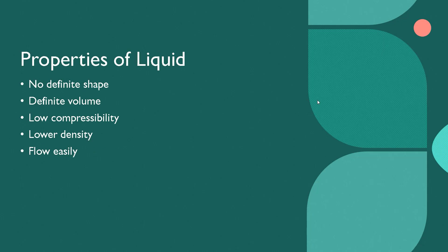Properties of liquid: No definite shape — liquid particles are close together but not orderly arranged. These particles are in constant motion and slide past one another but stay together. Definite volume — liquid particles have strong attraction between each other, which allows its volume to be maintained even when transferred to another container. Low compressibility — because of the closeness of the particles, there is only a little free space for them to move. Lower density — this is because of the absence of an orderly arrangement between particles, even if they are close together.